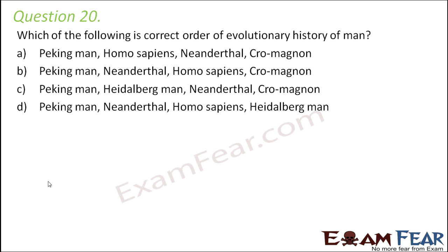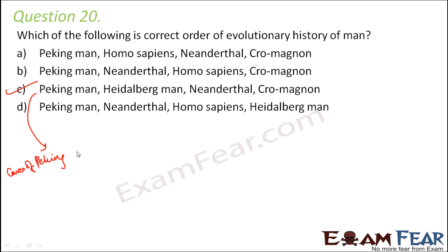Question number 20: which of the following is the correct order of evolutionary history of man? Peking man, homo sapiens, Neanderthal, Cro-Magnon. The correct sequence is Peking man, followed by Heidelberg man, followed by Neanderthal, and finally Cro-Magnon. Peking man was found in caves near Peking and was later named homo erectus.